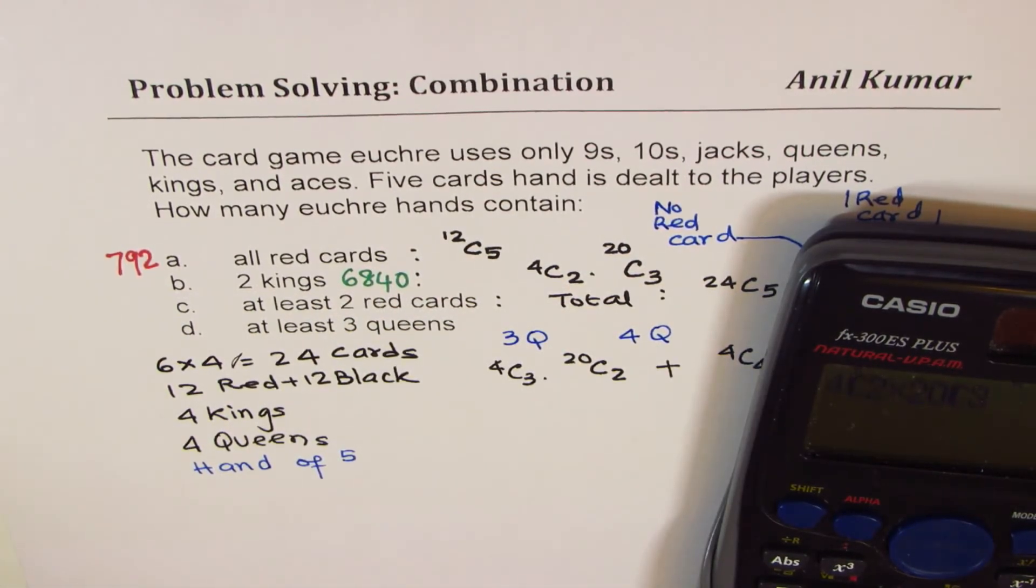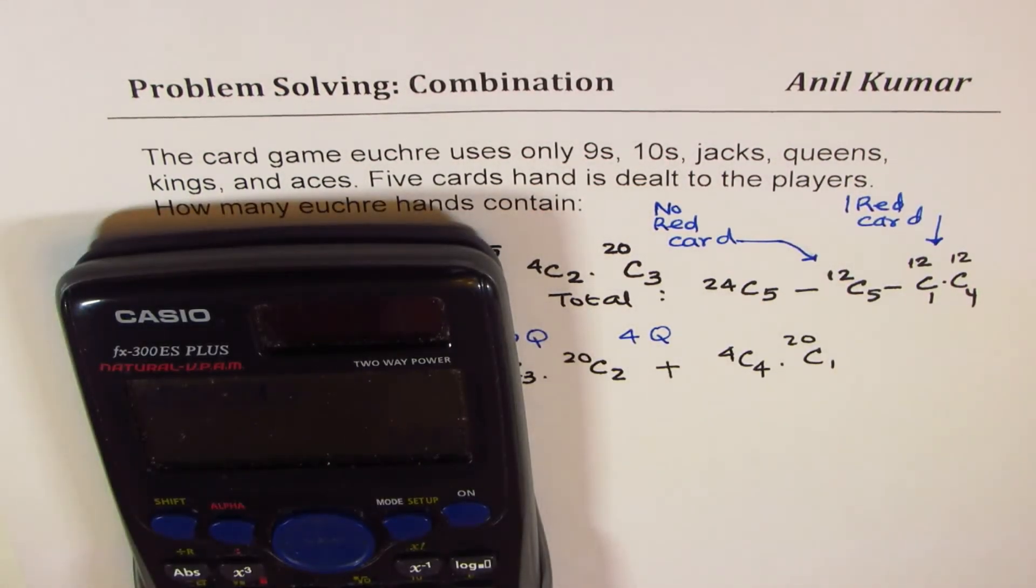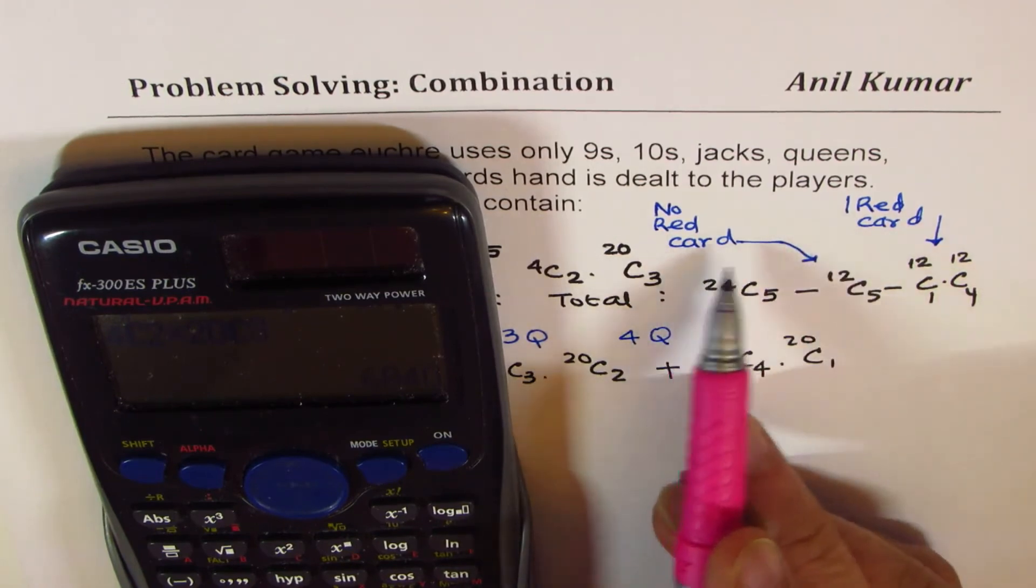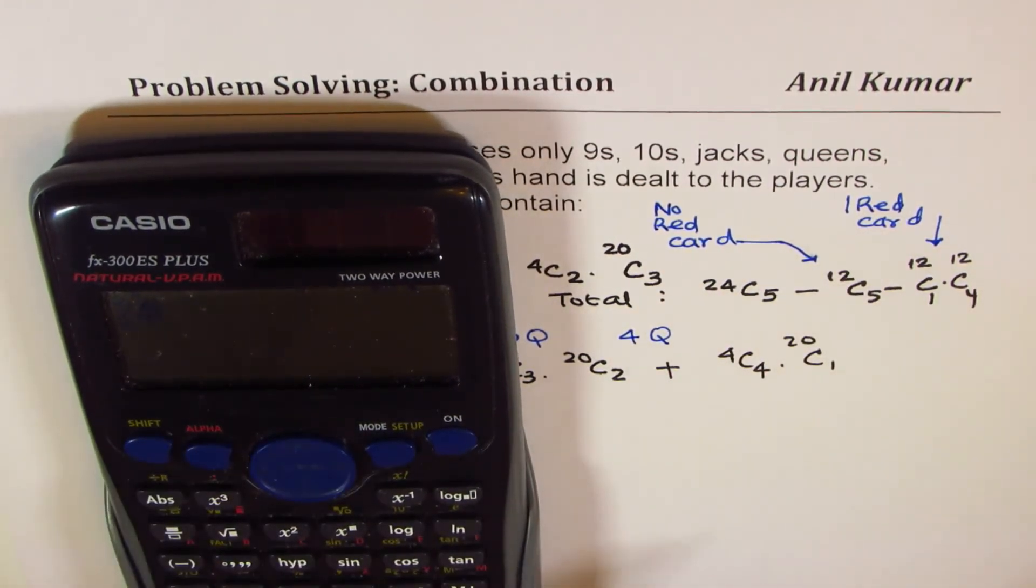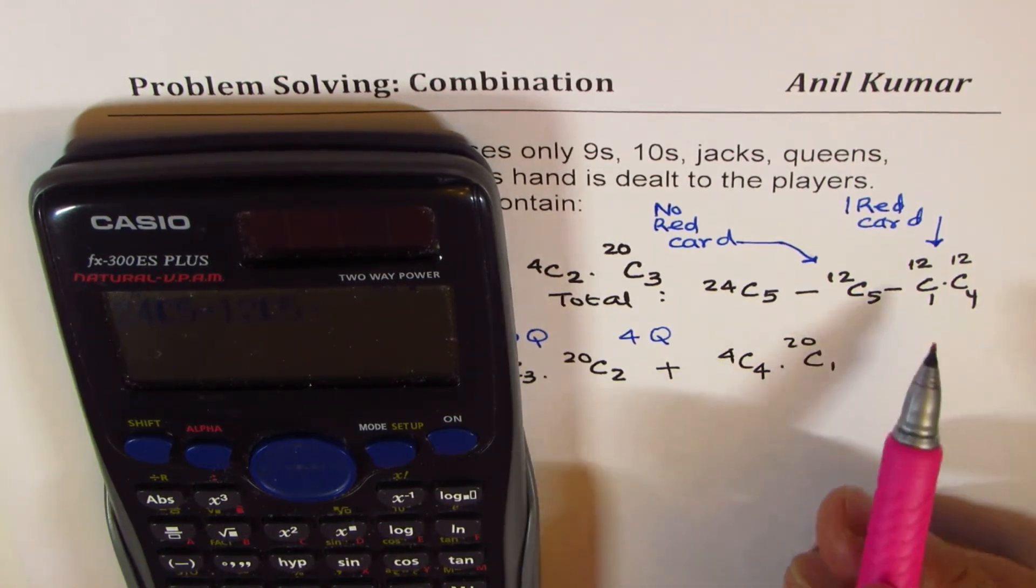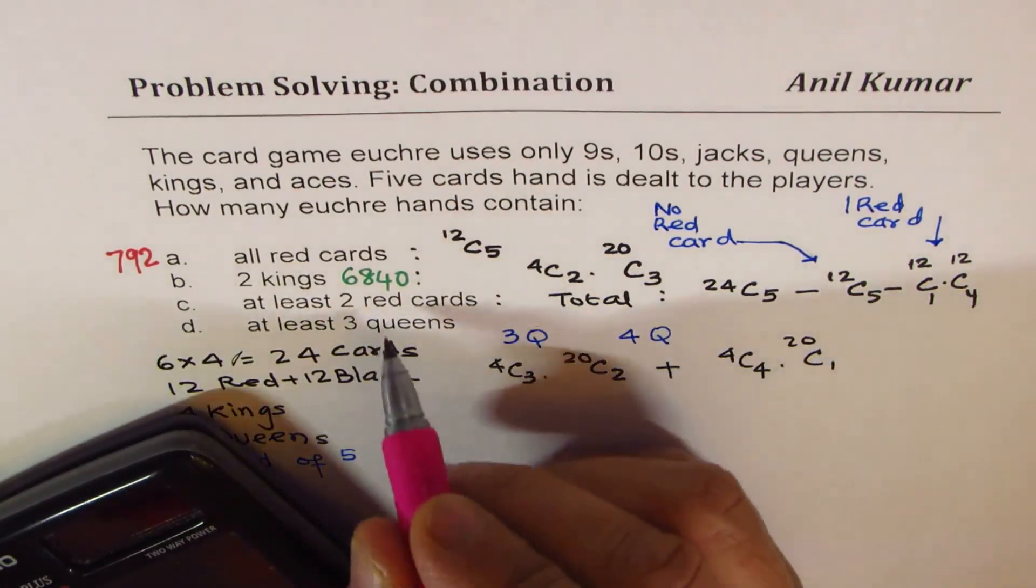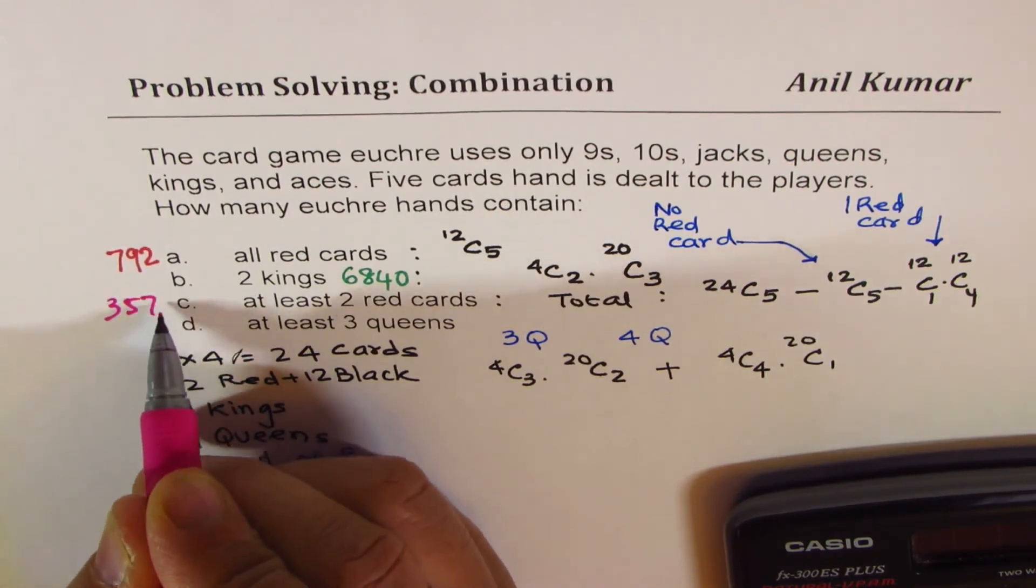Then we have at least two red cards. So at least two red cards, we'll go in with this combination. At least two red cards means total take away one red card and zero red card. So we have 24C5 take away 12C5, and then we take away, I mean we have to multiply this. Take away 12C1 times 12C4. So that gives you 35772. So this one is 35772.